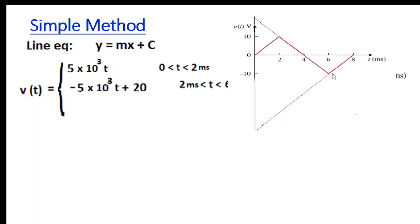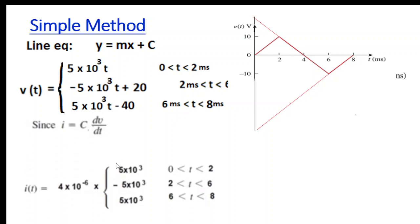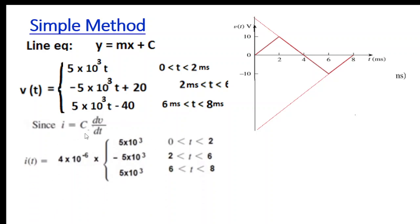For the third part the slope is again positive, same as the first: 5×10³. Extending the line, the Y-intercept pattern goes: 10, then -20, then 30, then -40 — it must be a multiple of 10, so we write -40 directly. After writing all three equations, we apply i = C · dV/dt, simplify, and get the same answer as before.